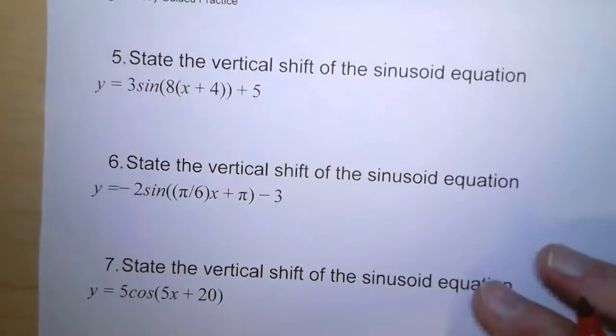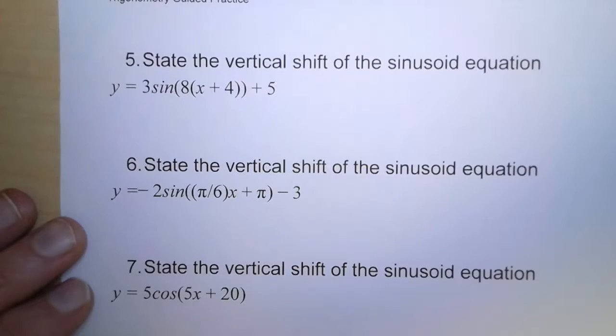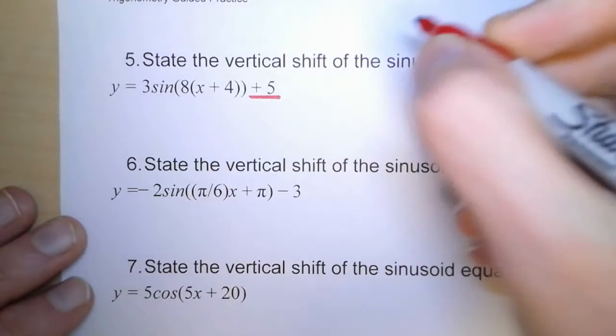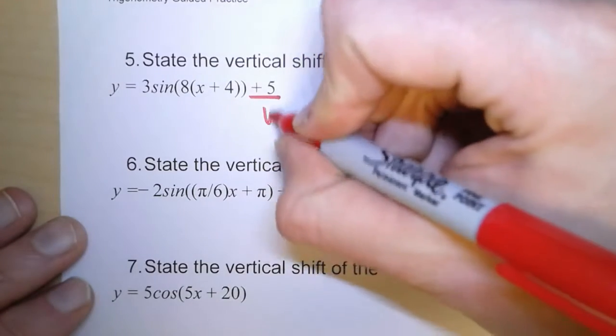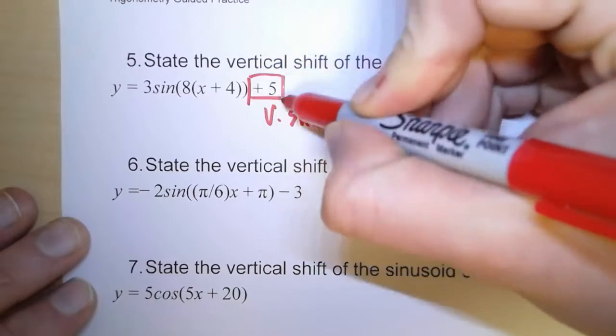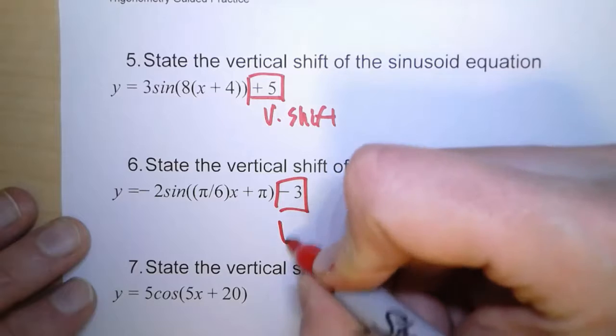Now on the last page, we don't have graphs. We just have equations. And so how do we identify the vertical shift? Well, what we're doing is we're asking, how is the function moved up or down? So we're asking, what are we adding or subtracting outside the function? And so that right there is our vertical shift. In this problem, it's plus 5. In this one, it's minus 3.